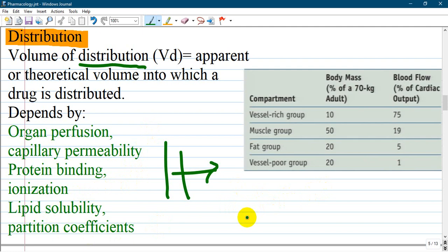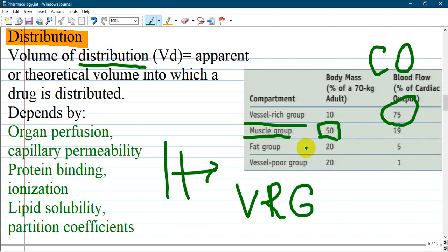Vessel rich group - tissues that are vessel rich. For example, brain, heart, liver, kidney, which receive 75% of cardiac output. These organs receive almost all the blood from the heart. Others represent half of the body like muscle or vessel poor group and receive less blood. Distribution to these organs is very high.